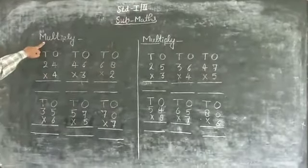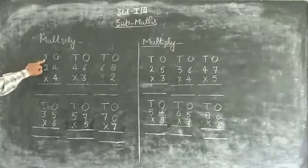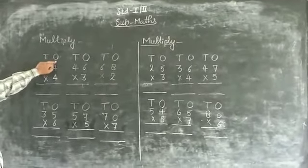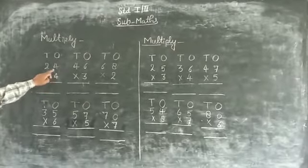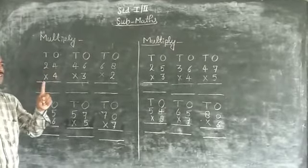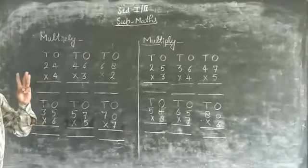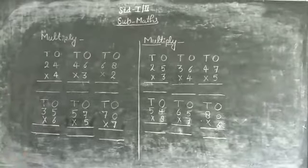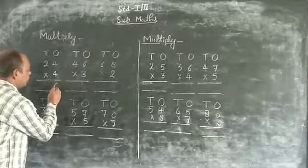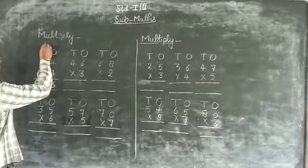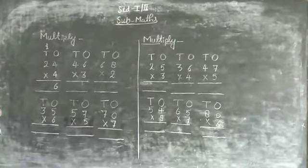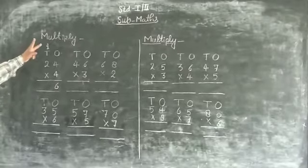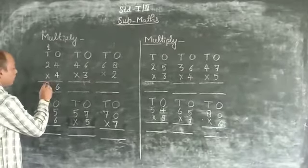24 multiply 4. T for 10, O for 1. 4 times table: 4×1=4, 4×2=8, 4×3=12, 4×4=16. So 16, write 6, carry 1. 4 times table 2: 4×2=8, plus 1 carry equals 9.